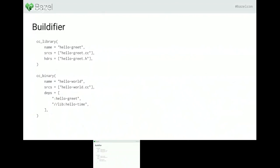For those who don't know about it, Buildifier is just a code formatter for build files — something like GoFormat, ClangFormat, or similar tools in other languages. You write your build file, run Buildifier, and it formats it in a nice, standard way so all build files look the same. It's much easier to read them. Most importantly, since all build files are formatted the same way, they can be modified automatically. Tools that modify build files don't have to care about indentation or keeping comments in the right place.